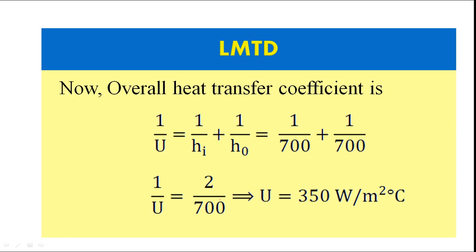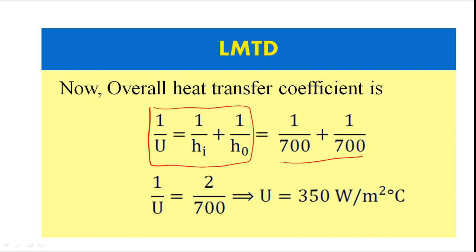Now for the overall heat transfer coefficient: we have the convective heat transfer coefficients for both fluids, H_i and H_o, both equal to 700 W/m²°C. Substituting these values, the overall heat transfer coefficient U comes out to be 350 W/m²°C.